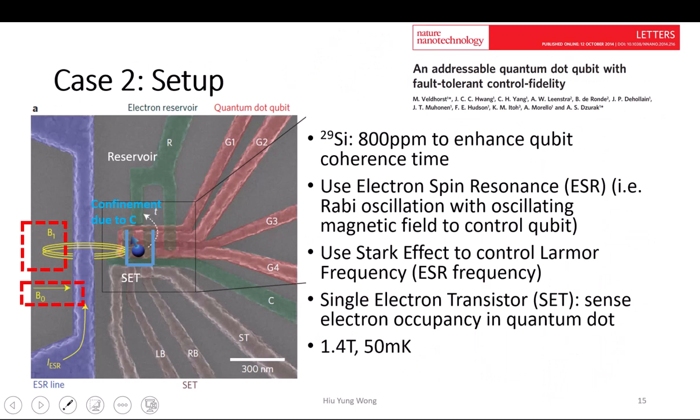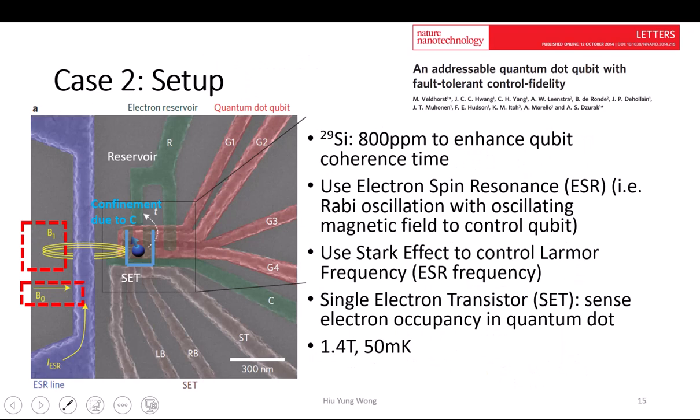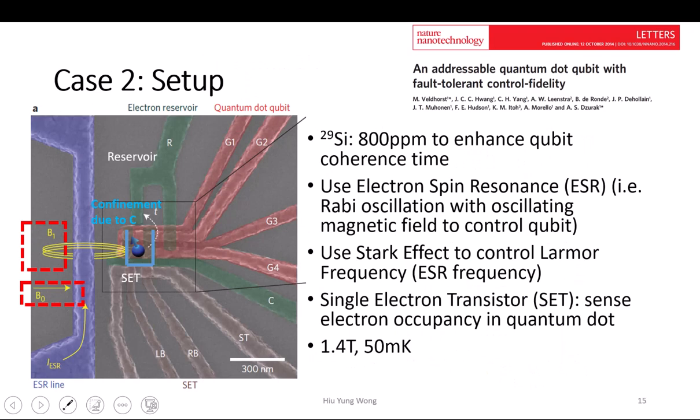So that is it — that is how you read out a qubit, whether it is spin up or spin down. Next week I will do some calculation, and then we will go to talk about how to still do readout — a more systematic way about the single-qubit and two-qubit gates.